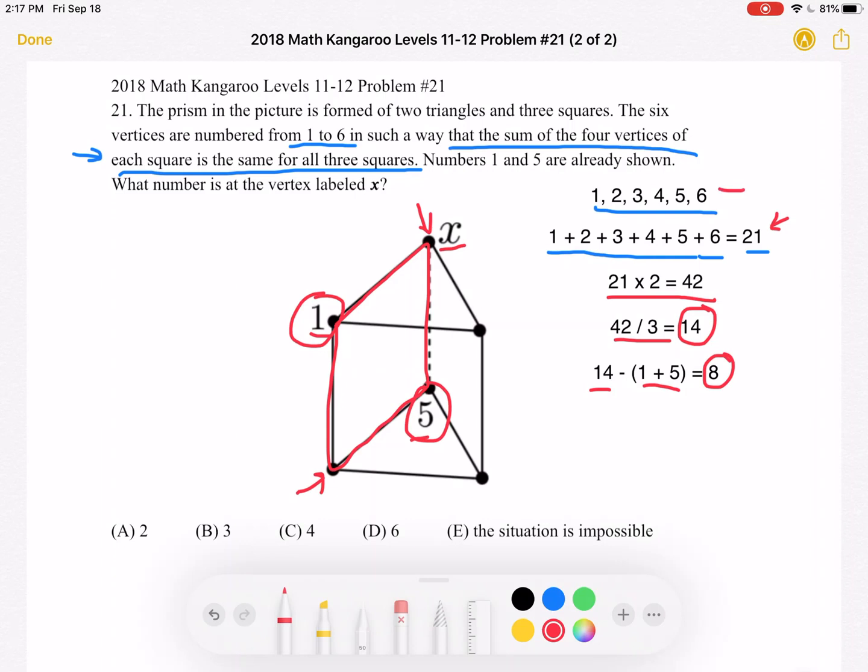So let's take a look again at the numbers we have. We've already used 1, we've already used 5. So how can we make a sum of 8 with the remaining numbers? Well, as you can see, we must be using 2 and 6. That's the only way we can make 8. So now we need to figure out, is it 2 here or is it 6?